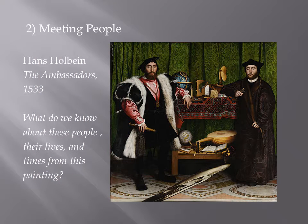Let's meet a few interesting people. Let's look at a painting by Hans Holbein called The Ambassadors, created in 1533. Here we have two younger career gentlemen. The question is: what do we know about these people, their lives, and their times from this painting? We do have an exact date for this painting, but even without it, we would be capable of making a guess based on their clothing.